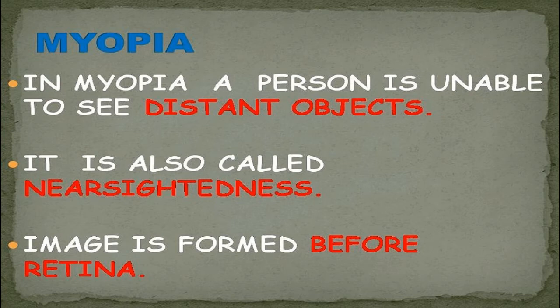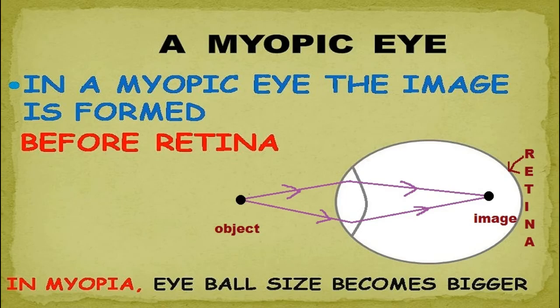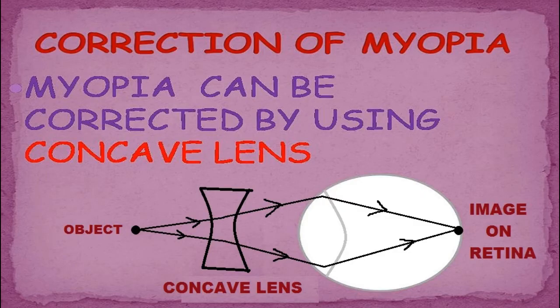In a normal human eye, the image is always formed on the retina. The retina is also known as the screen of the human eye. But if the eye has any kind of defect, the image will not be focused on the retina. In the diagram, you can see that light coming from objects is converged by the eye lens before the retina, not on it. In myopia, the eyeball size becomes bigger.